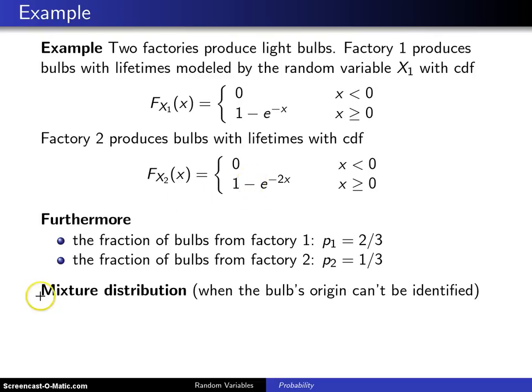It's a mixture of the two. So what I'm going to do here is I'm going to be defining X as the bulb lifetime, the bulb that you have in your hand which you can't identify as coming from factory one or factory two. That'll be the random variable X and we're trying to find its cumulative distribution function.